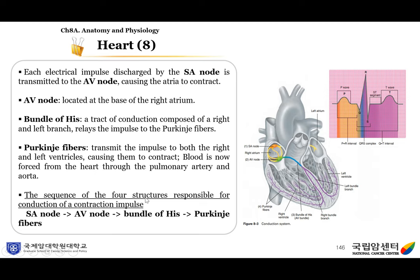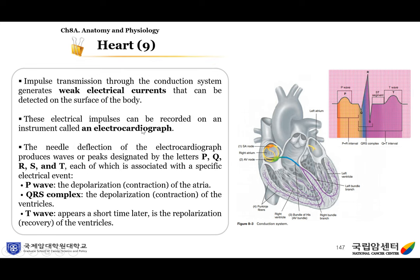This is the sequence of the four structures responsible for the conduction of a contraction impulse — please remember: SA node, AV node, bundle of His, and Purkinje fibers. The impulse transmission through the conduction system generates weak electrical currents detectable on the body surface. These electrical impulses can be recorded on an instrument called an electrocardiograph. The needle deflection produces waves or peaks designated by the letters P, Q, R, S, and T, each associated with a specific electrical event: P wave, QRS complex, and T wave.